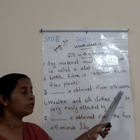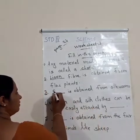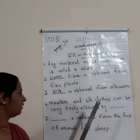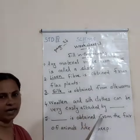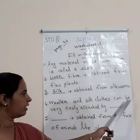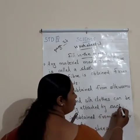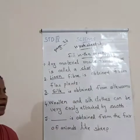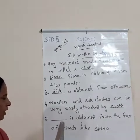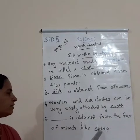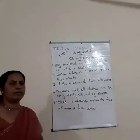Third: blank is obtained from silkworms — the correct answer is silk. Fourth: woolen and silk clothes can be very easily attacked by blank — the correct answer is moth, M-O-T-H. Fifth: blank is obtained from the fur of animals like sheep — the correct answer is woolen.